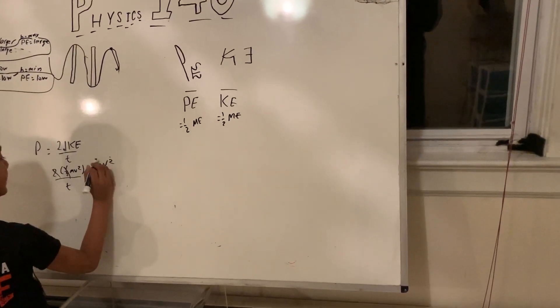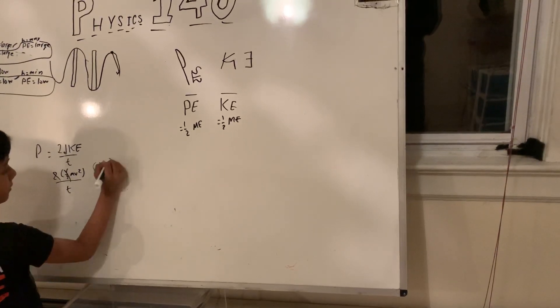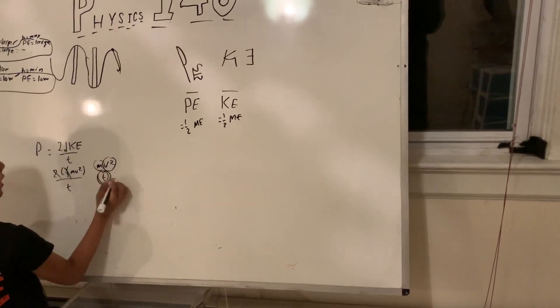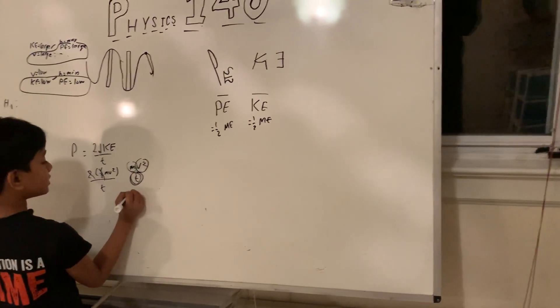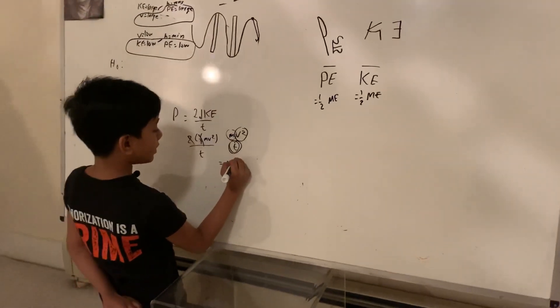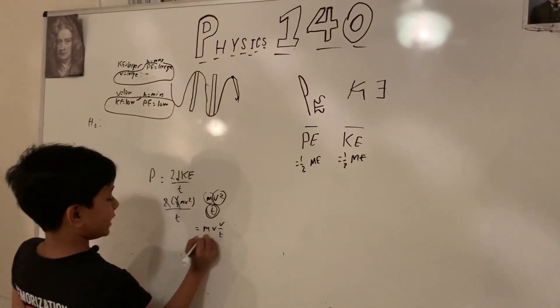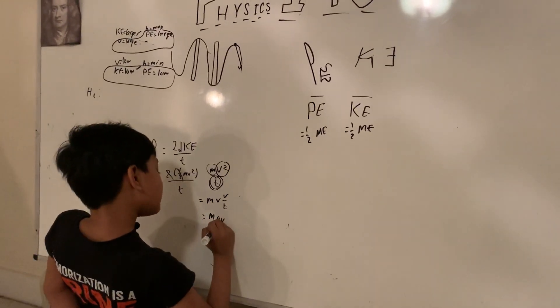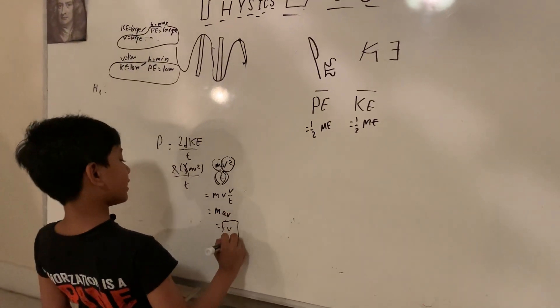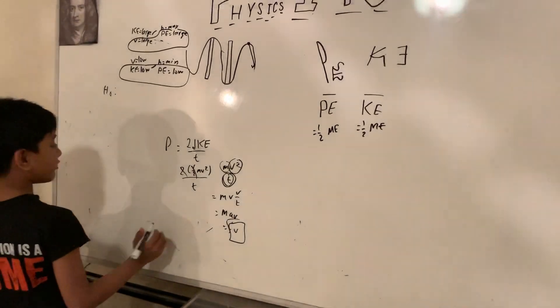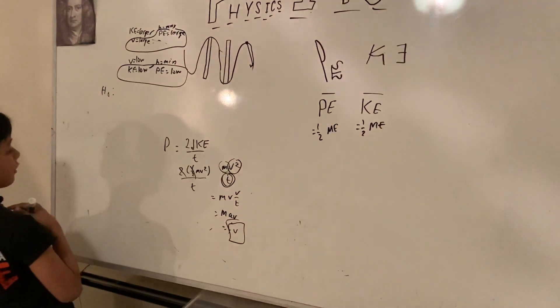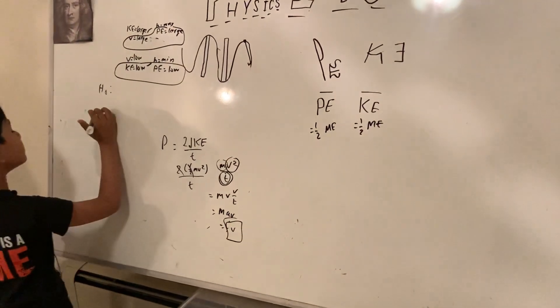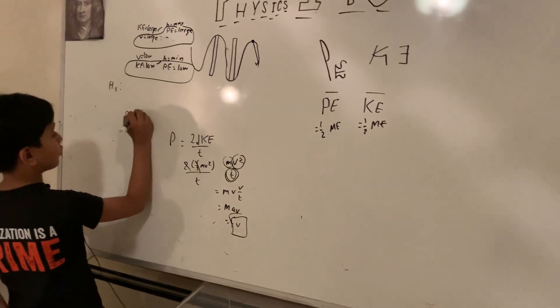Now you might be tempted with the m and the T, but v squared and T are very important, since that's going to be mv times v over T, which is mav. Now mav collapsed into f, giving us a simplified version f times v. Now why is that important?